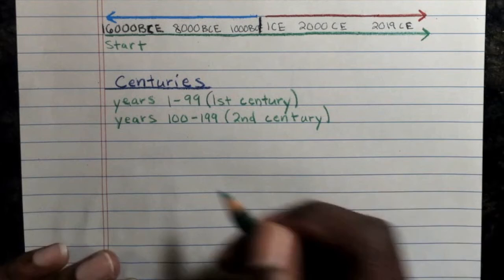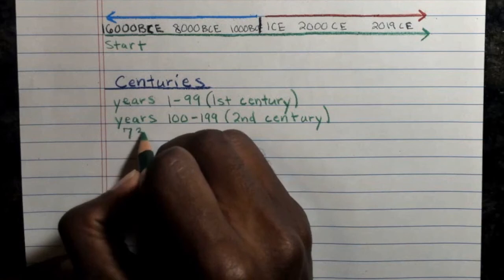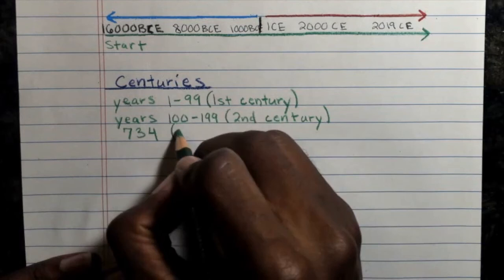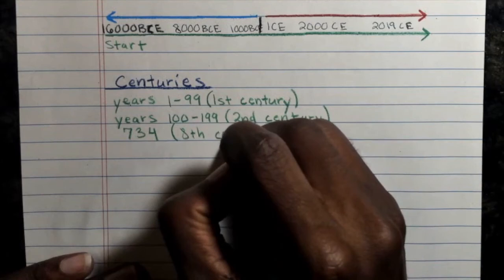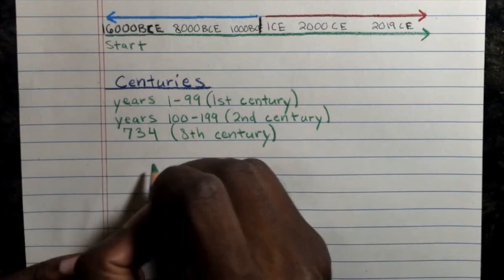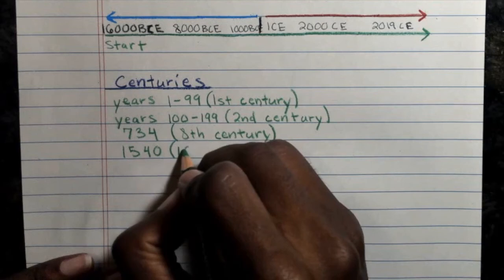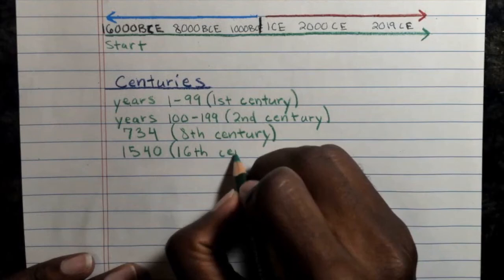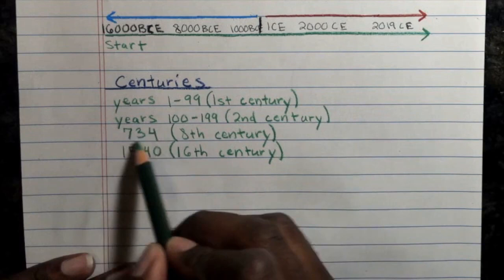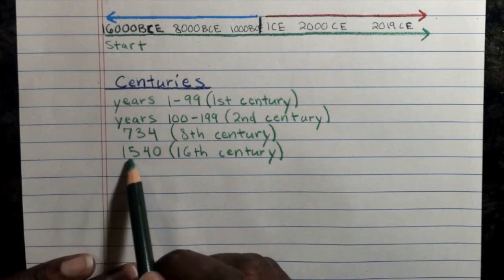Let's say we have the year 734 — which century would that be in? That's the 8th century. One more example: the year 1540 would be in the 16th century. The rule is you go up one number — the 700s put you in the 8th century, and the 1500s put you in the 16th century.